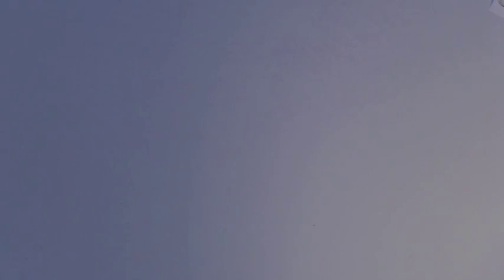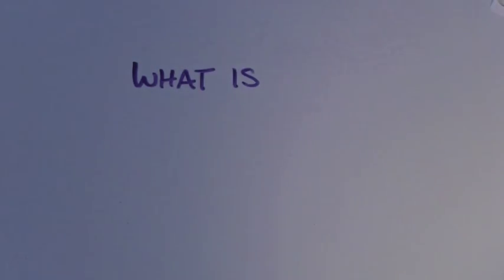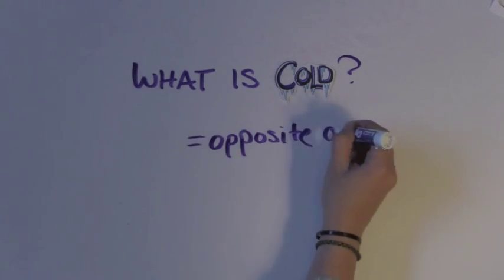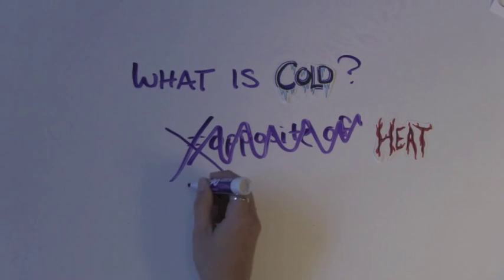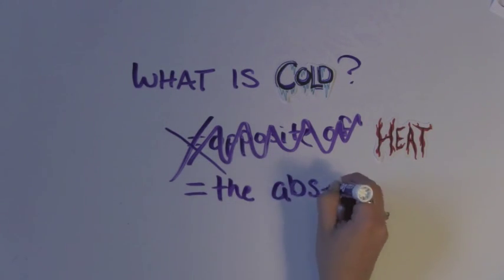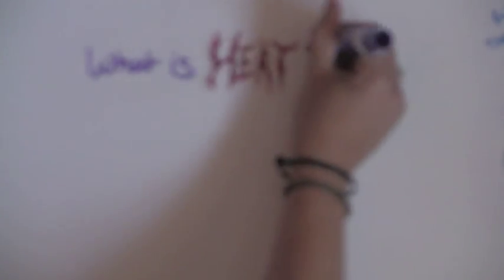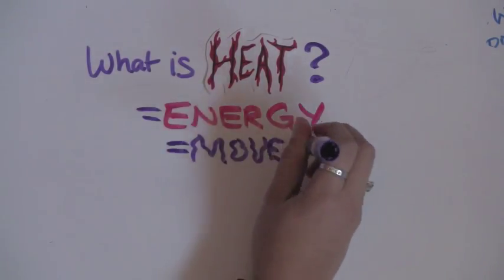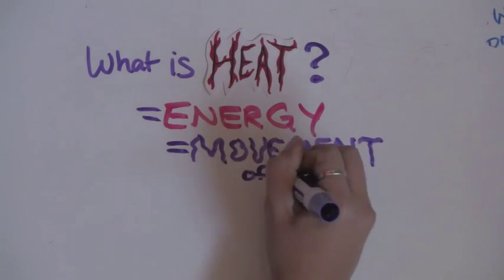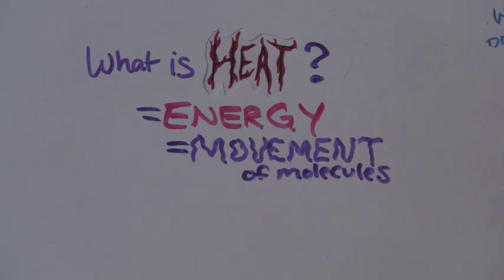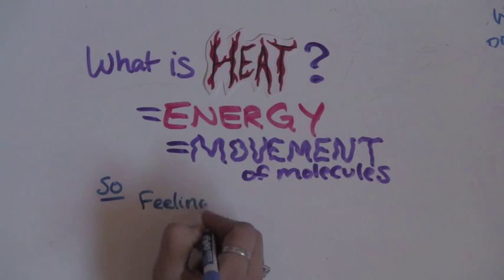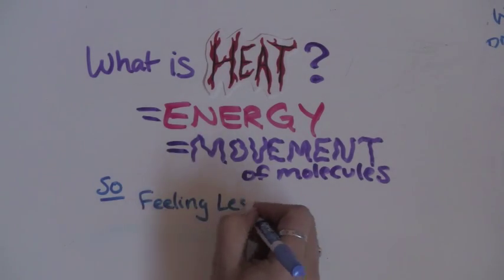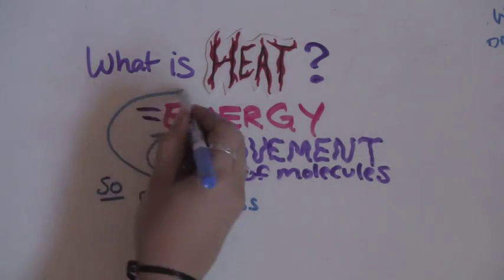Let's define cold because it's a little different than what most people think. It is not the opposite of hot. There is no such thing. It is actually the absence of heat. So what is heat then? Heat is energy. This energy is seen in the movement and motion of molecules. The faster things move, the hotter and more energy they have. The slower things move, the less hot and less energy they have. So when we feel cold, we are actually feeling a decrease in motion, less heat, and more simply, feeling less hot.